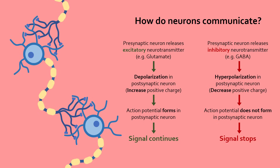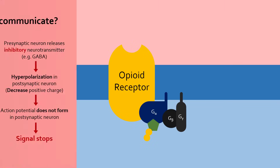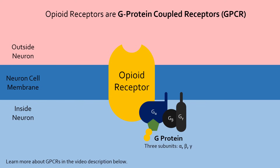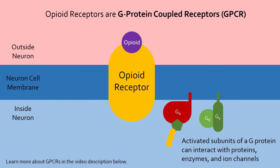Now, how do opioid drugs stop this communication from occurring? When opioid drugs bind to opioid receptors on neurons, they can prevent the presynaptic neuron from releasing neurotransmitters — called presynaptic inhibition — and prevent the postsynaptic neuron from depolarizing — called postsynaptic inhibition. To understand how these two processes work, let's take a closer look at opioid receptors. These receptors are a special kind of receptor called a G-protein-coupled receptor, meaning that a G-protein is attached to the receptor. When an opioid drug binds to the receptor, a variety of structural and molecular changes occur that activate the G-protein. The G-protein separates into two subunits, alpha and beta-gamma, which interact with other proteins of the cell.